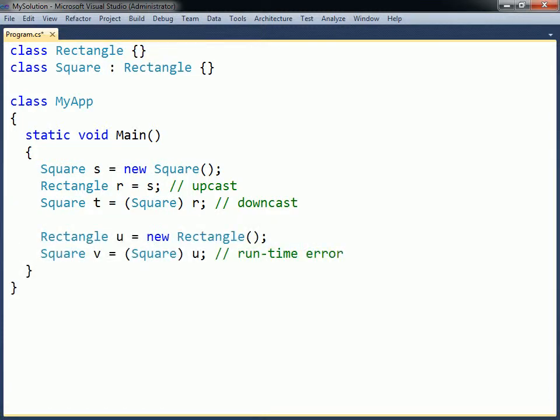The downcast has to be made explicit, since downcasting an actual rectangle into a square is not allowed.